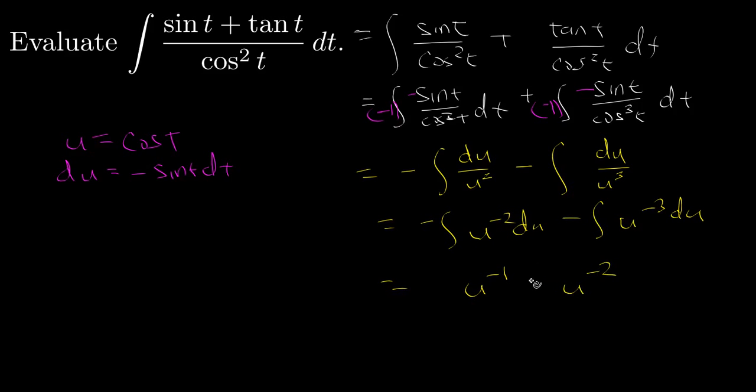times this negative 1 out here, so I have plus 1 half plus c. To finish the problem I just need to rewrite u as cosine t,